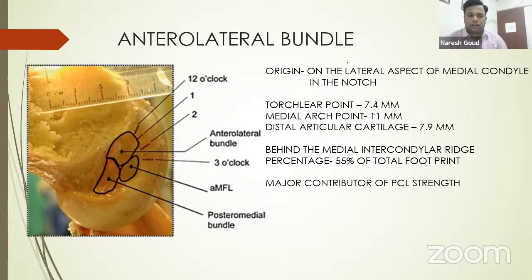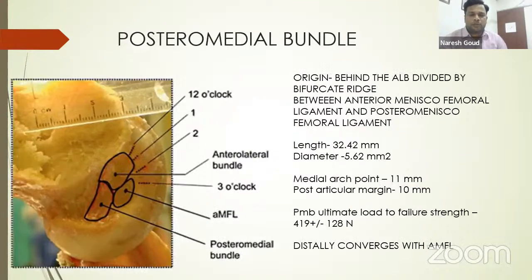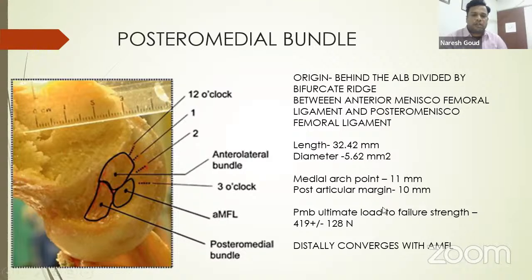The posteromedial bundle lies just behind the anterolateral bundle, behind the bifurcate ridge, between the anterior and posterior meniscofemoral ligaments. Its length is 32 mm and diameter is 5.62 mm. The middle arch point is 11 mm away, and from the posterior articular margin it is 10 mm. The ultimate load to failure strength is 419 Newtons.